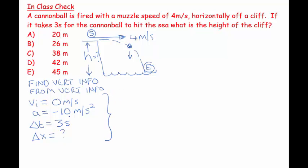So now I look for an equation that links my initial velocity vertically, my acceleration vertically, my time, and my displacement vertically. The equation that comes to mind is Δx = Vi·Δt + ½a·Δt².